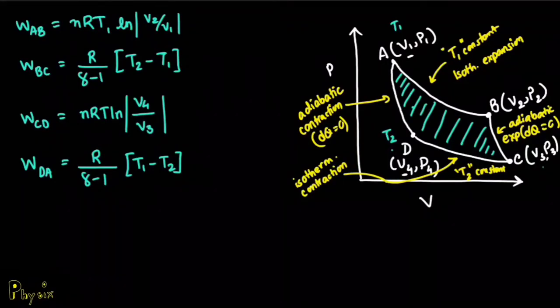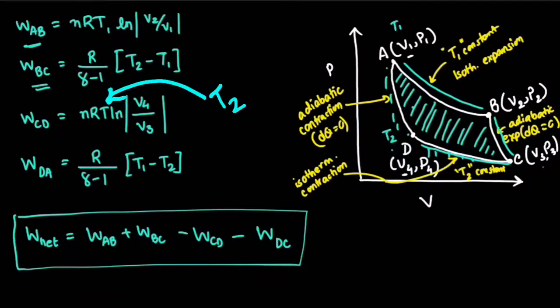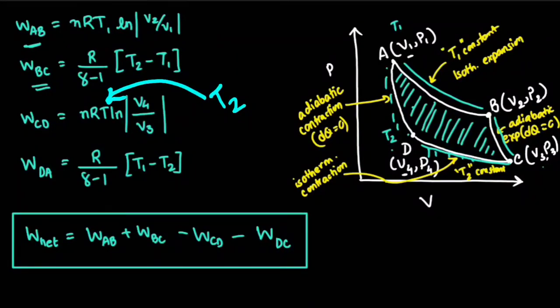We can say that the area enclosed in this cycle is basically the network done. The network done can be represented as W_AB across this, plus W_BC across this, minus the area enclosed by W_CD which is below this, and minus the work done along this process, which means from D to A. And thus, here you go. This is the network done in a Carnot cycle.